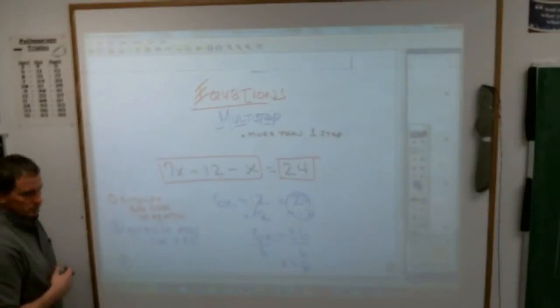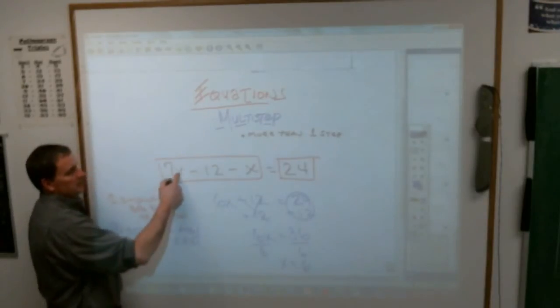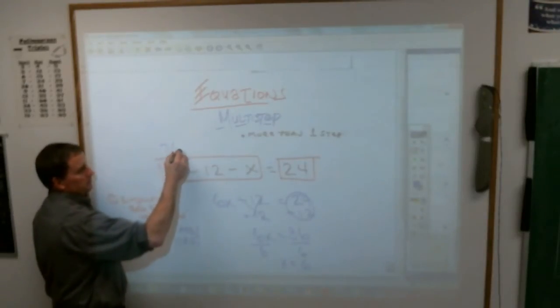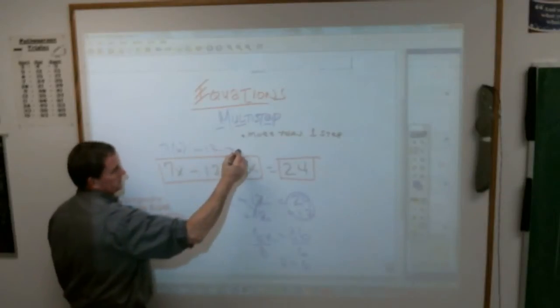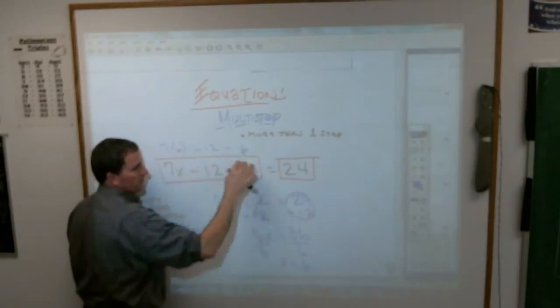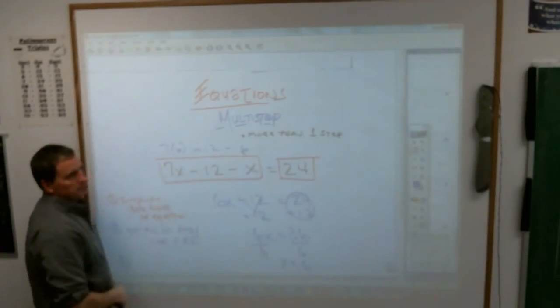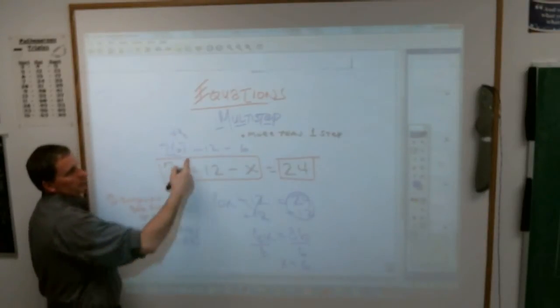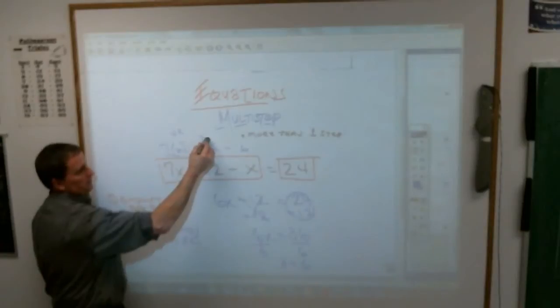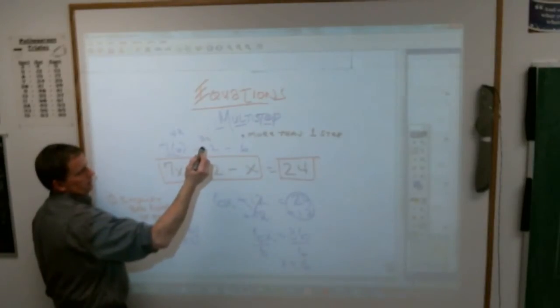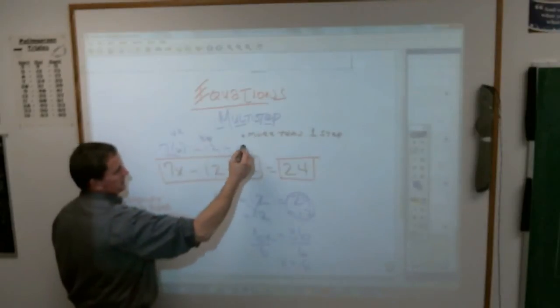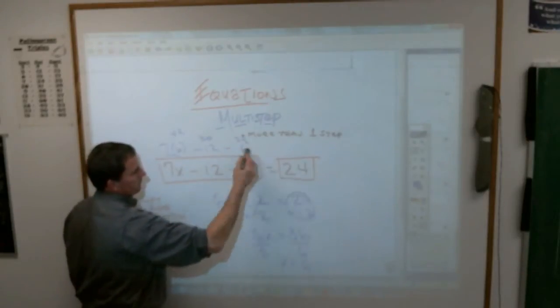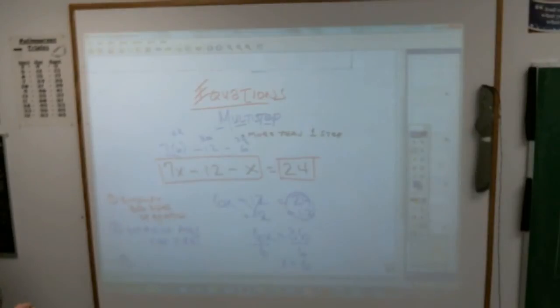To which you're going to ask yourself, do you suppose that works? I don't know. Let's see. If I put a 6 in for x in both these places, am I going to get 24 equals 24 over here? Well, 7 times 6 is 42. 42 minus 12 is 30. And 30 minus 6 is 24. So 24 equals 24. I know I did the problem correctly.